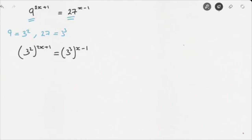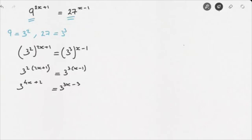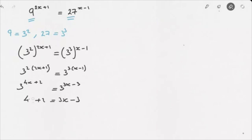Simplifying this, we find 3 to the power of 2 times (2x plus 1) equals 3 to the power of 3 times (x minus 1). This leads us to 3 to the power of 4x plus 2 equals 3 to the power of 3x minus 3. Now that we've written everything as a power of 3, we can get rid of those 3's and equate the exponents: 4x plus 2 equals 3x minus 3.